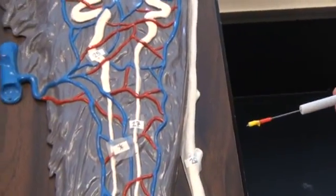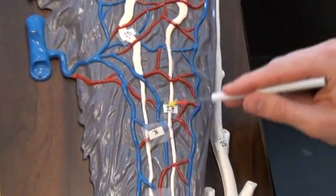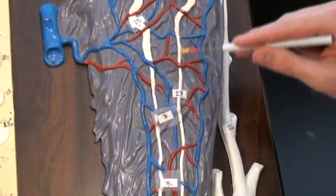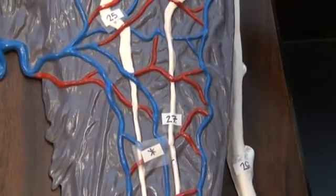Number 27 refers to the descending limb, the thin wall of the descending limb of the nephron loop, right here. This would have been your thick.